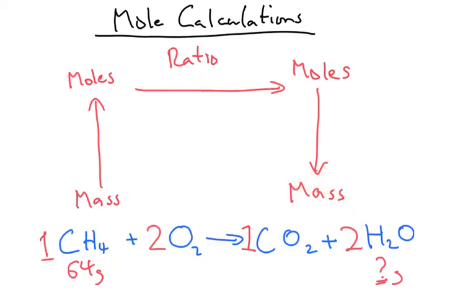So let's have a little look through. Firstly, we need to work out how many moles of methane we've got. So we're going to do 64 divided by the molar mass. Well carbon is 12 and we've got 4 hydrogens that's 1 so that's 16. 64 divided by 16 gives us 4. So we've got 4 moles of methane.